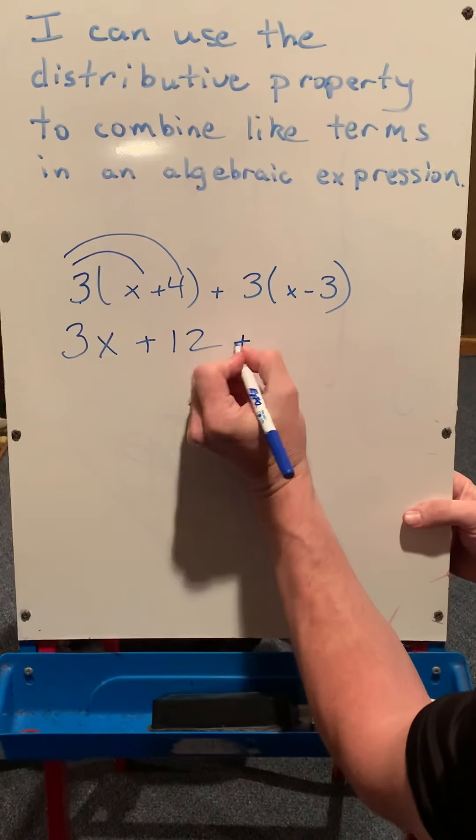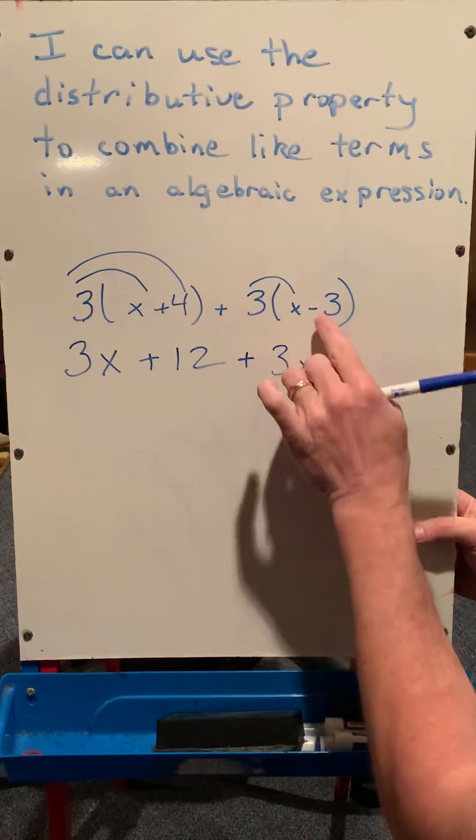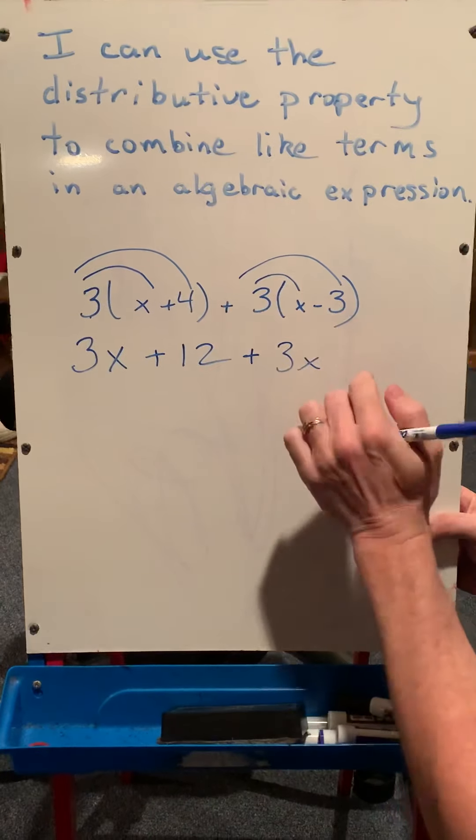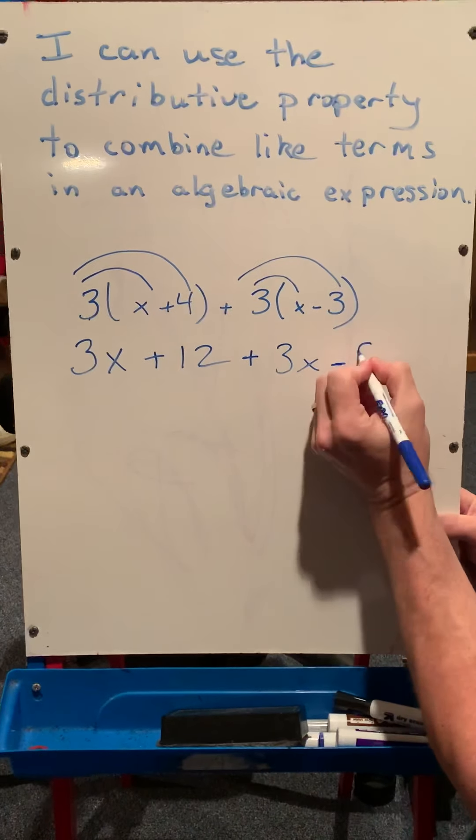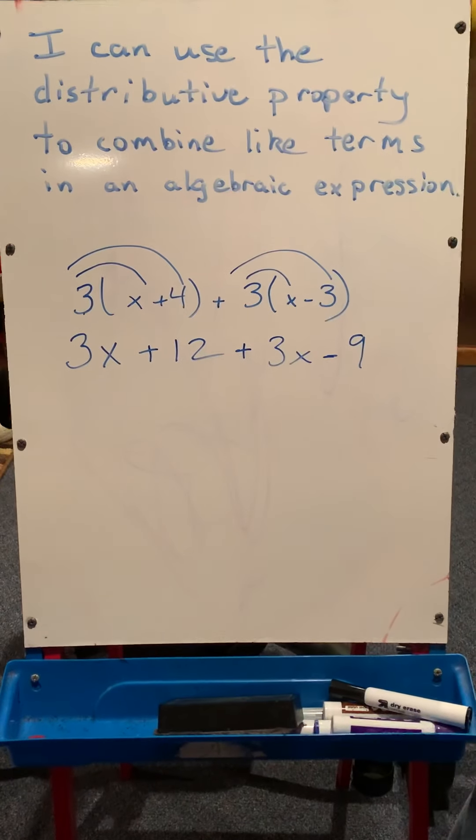And then we'll continue and distribute again. So 3x plus 3 times x is 3x, and notice this time it's subtraction, so it's 3 times 3, but it's going to be minus 9. And you can also look at that as a negative 9, but 3x minus 9.